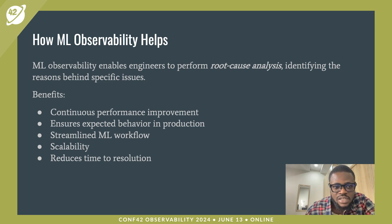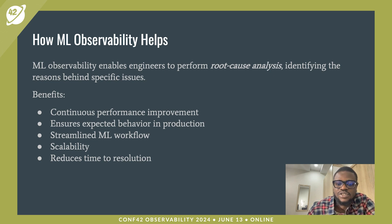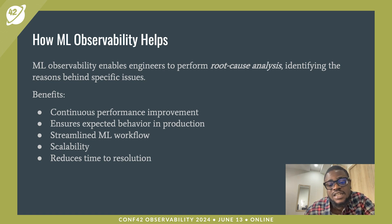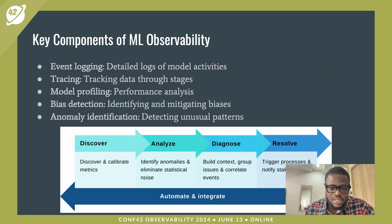Now that we understand what can happen without proper model observability, let's talk about how model observability helps and the benefits we get from it. Model observability enables engineers to perform root cause analysis and identify the reasons behind specific issues. It doesn't just generalize errors — it helps engineers go down to the root cause and understand the specifics. The benefits include continuous performance improvements, expected behavior in production, streamlined machine learning workflow, scalability, and reduced time to resolution.